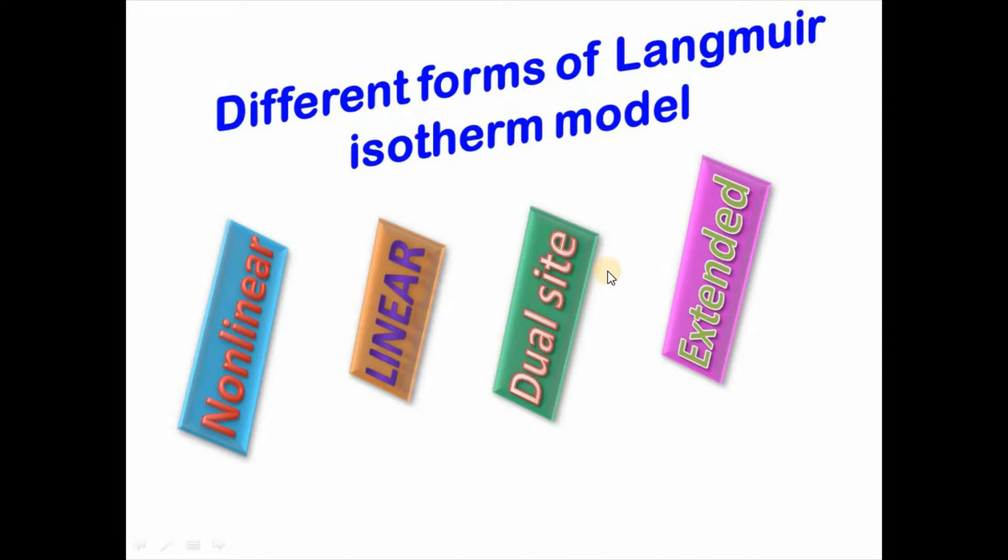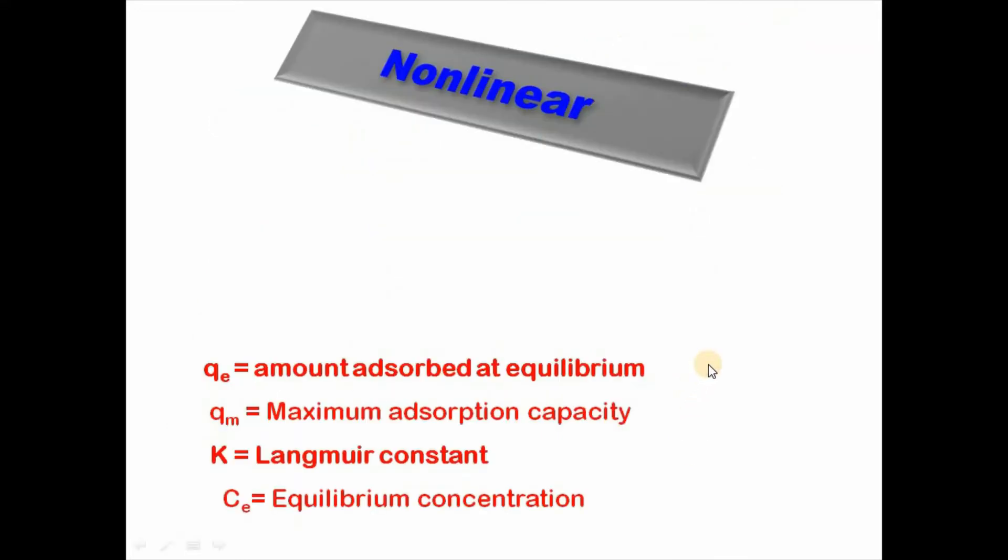This video is very important so please do not miss it. Langmuir isotherm is the most studied isotherm by scientific community, so a notable attention has been created to work on this isotherm model. Researchers have proposed four different types of Langmuir isotherm model, and these are nonlinear, linear, dual-site, and extended Langmuir isotherm model. Let us start with nonlinear.